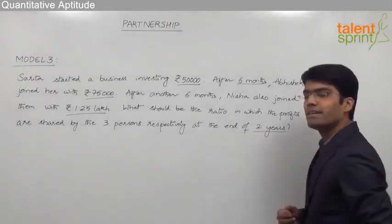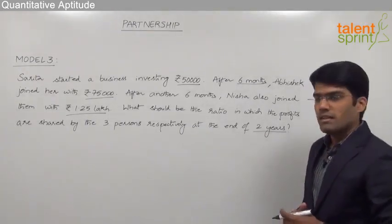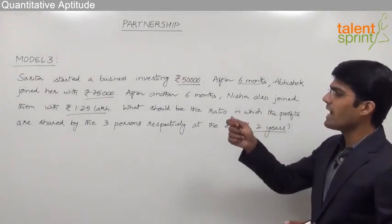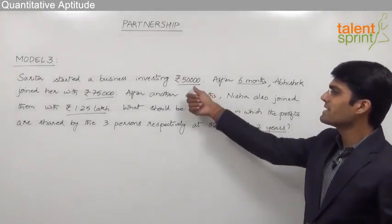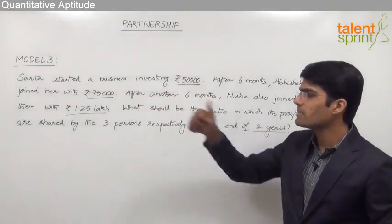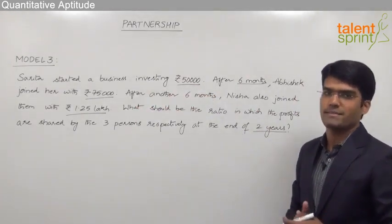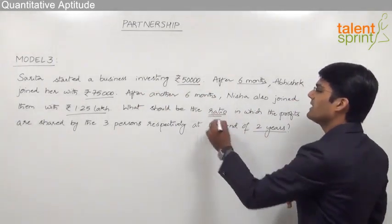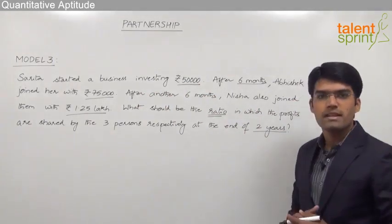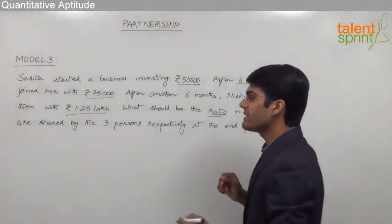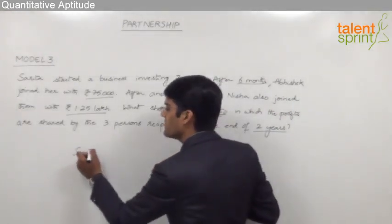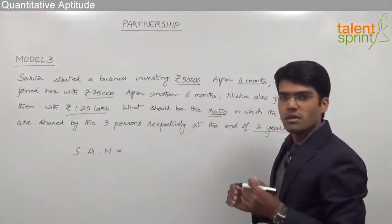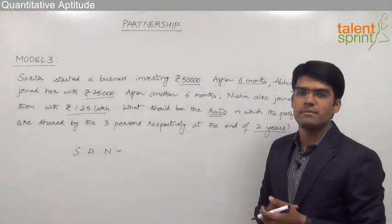The total time period here is 2 years. As we can see in this question, we have got 3 persons — Sarita, Abhishek, and Nisha — and their investments are 50,000, 75,000, and 1.25 lakhs respectively. We are supposed to find out the ratio in which they share the profits. As discussed earlier, the profits of Sarita to Abhishek to Nisha will be in the ratio of the products of their investment and time of investment.